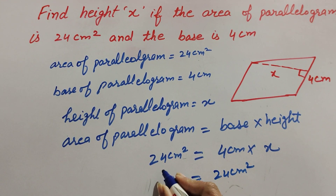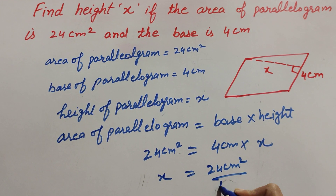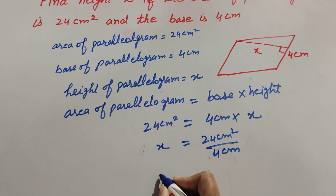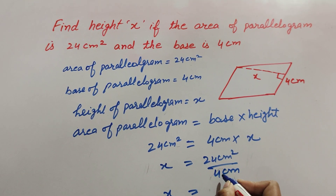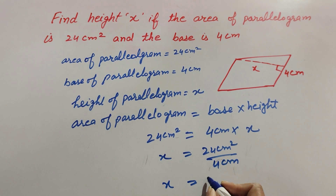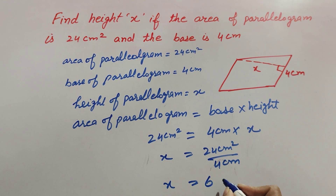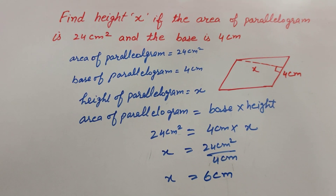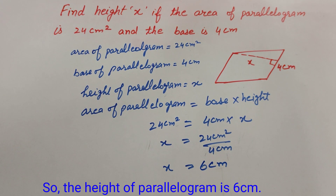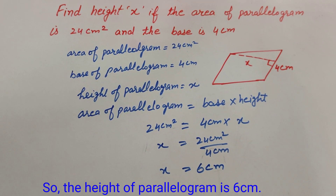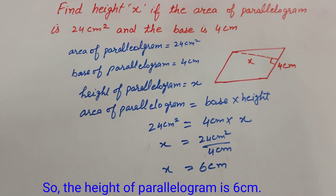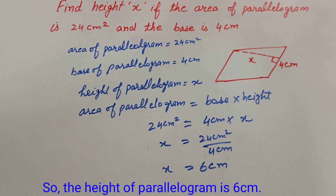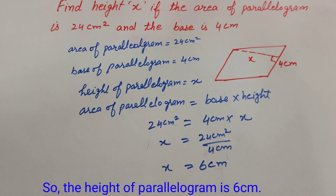Transposing 4 to the other side, x is equal to 24 divided by 4, which is equal to 6 centimeter. So the height of the parallelogram is equal to 6 centimeter. Thank you for watching — like, comment, and share my video, and subscribe to my YouTube channel.